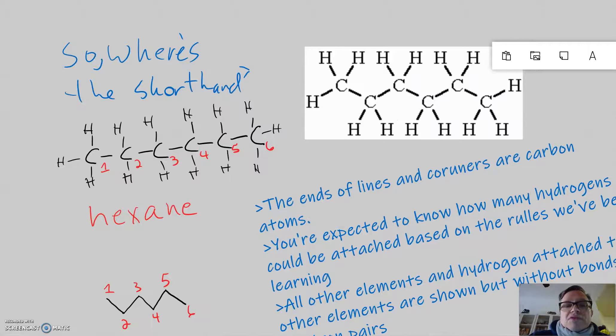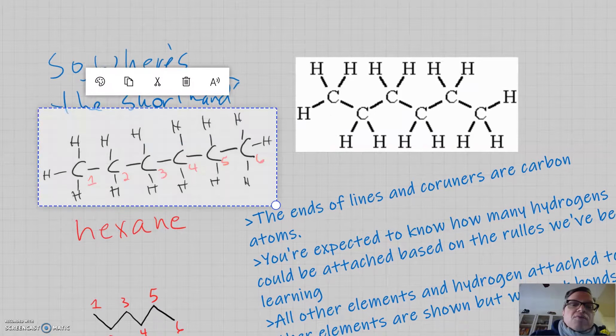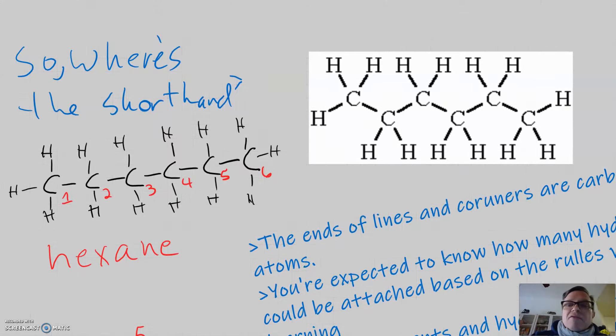So, skeletal structures are a way to abbreviate the carbons and hydrogens in a molecule. Because, often times these organic molecules are big and complicated and you want to make them simpler to look at. So, here's hexane. The hex implies that there are six carbons in this molecule. Here's another way to draw it, however.